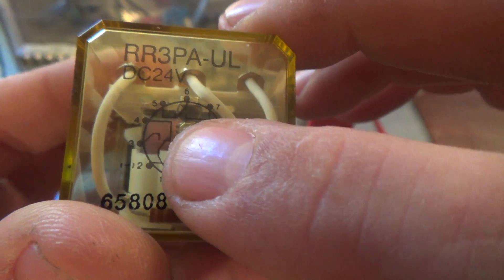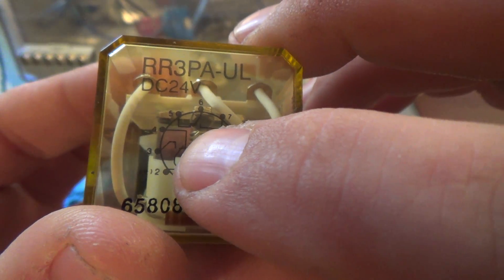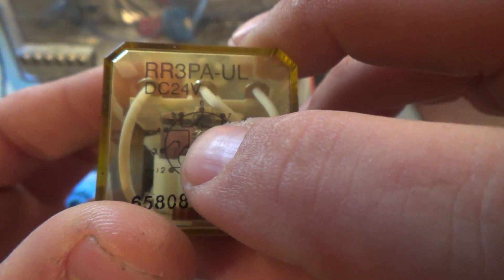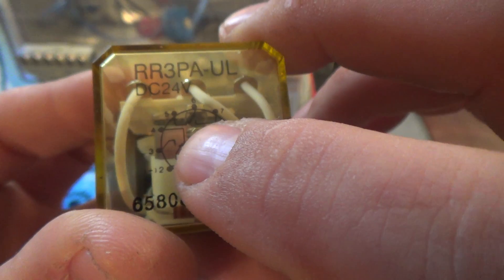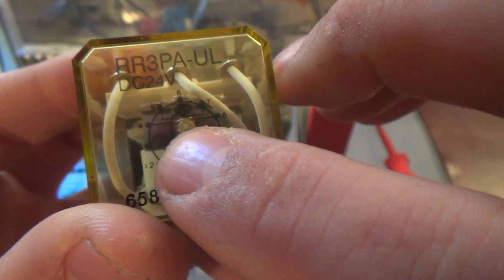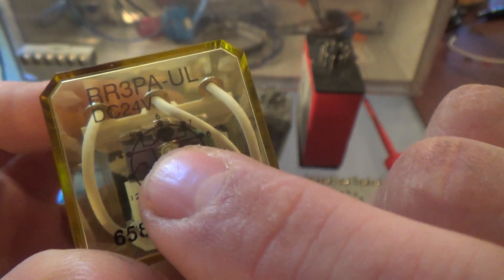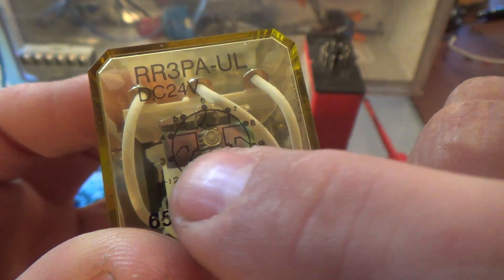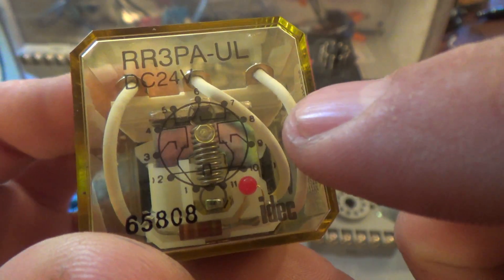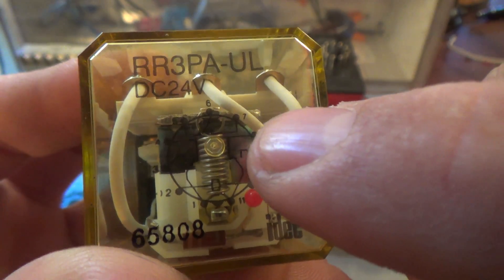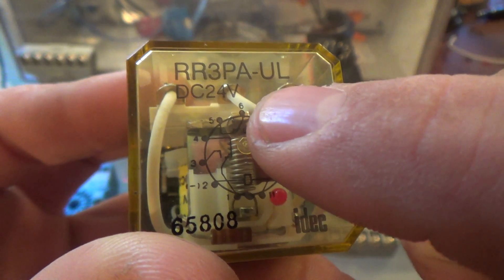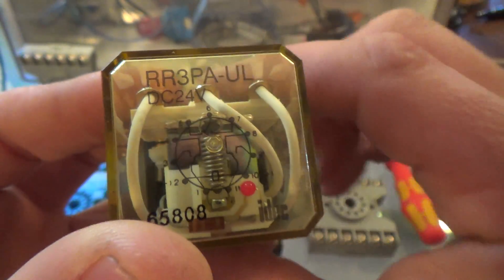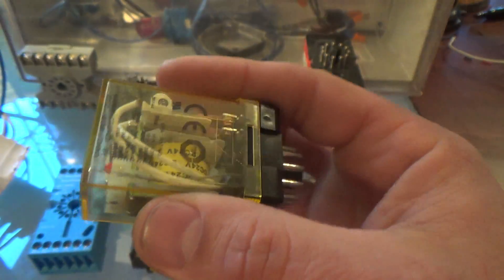Also you have pin one down here, terminal one, and it is going up and normally closed with pin four. When you apply power to the coil, energize the coil, that will change and pin one will disconnect from four and connect to three. So it's normally closed with four but it would change state and be normally open and then also change state with three and close. That's going to be true with all three sets of contacts that are on here - one, two, three, and you got your coil at the bottom.